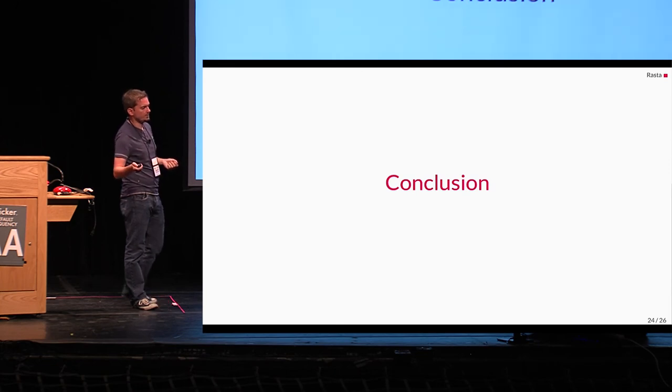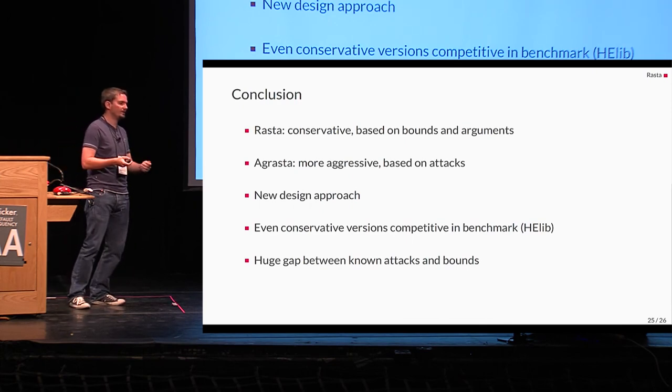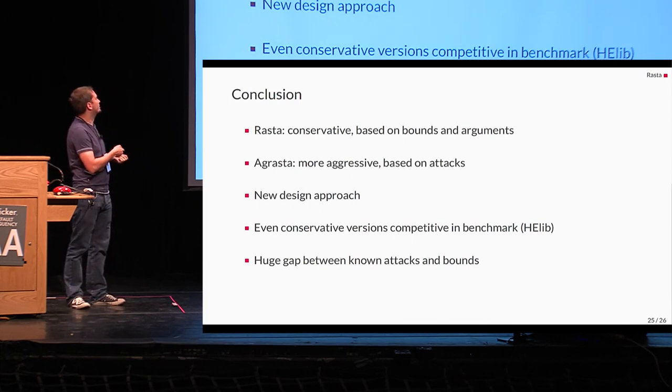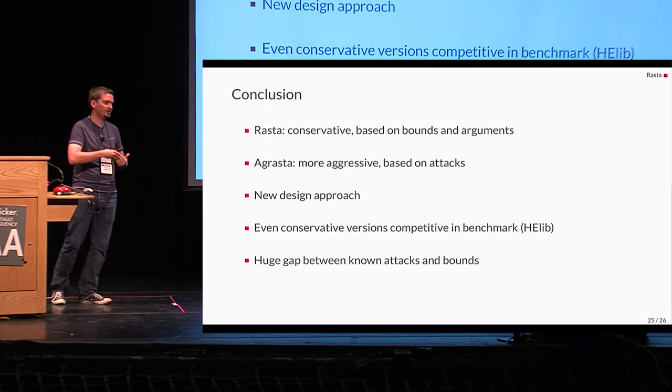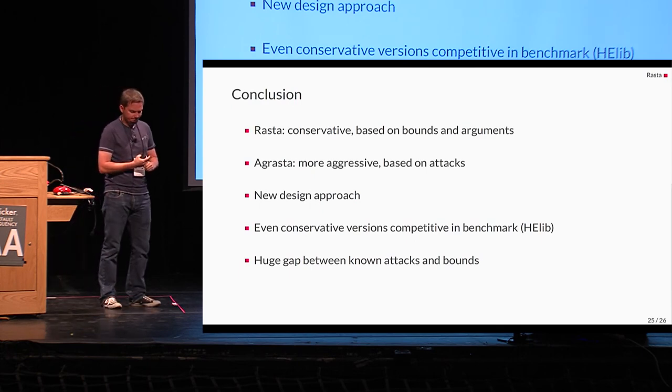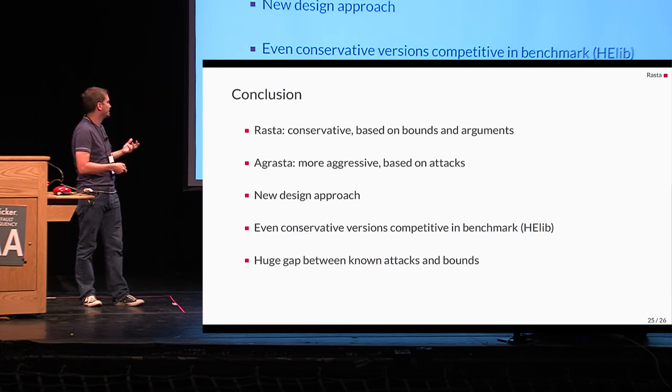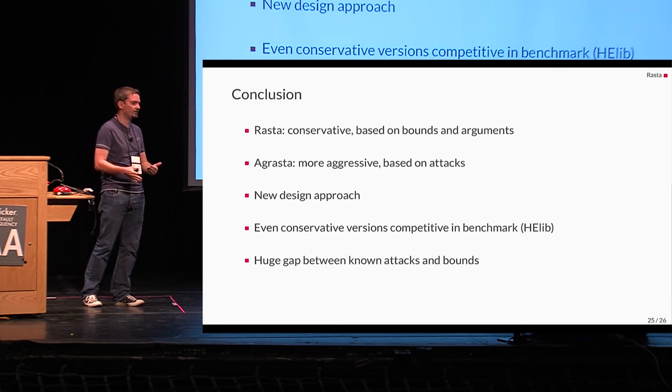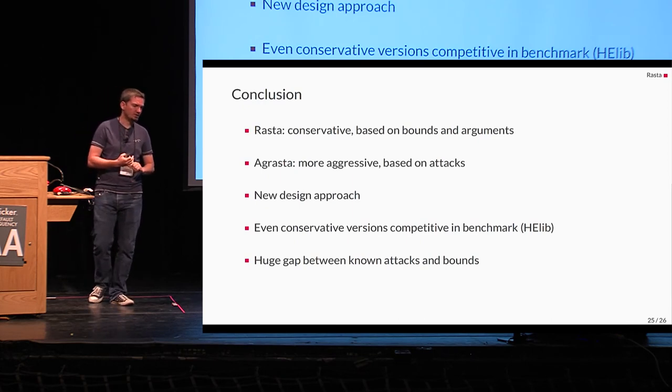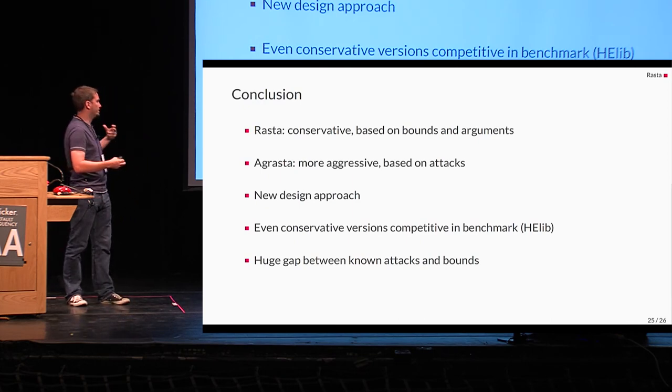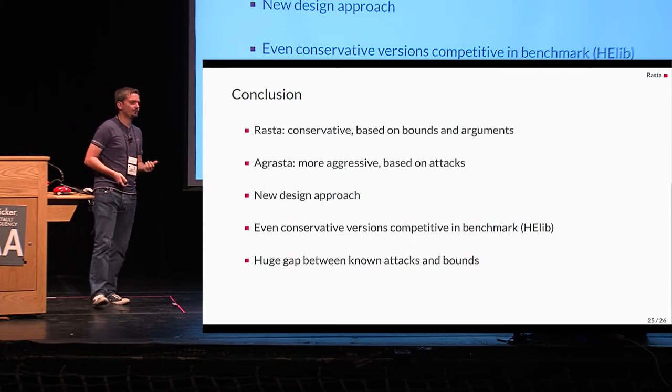So, let's come to a conclusion. What we have seen here, we have seen a new design strategy, which is called Rasta, and two parameter sets of it. One is conservative and based on bounds and security arguments, and one which is more aggressive and solely based on the best attacks we can do. In the paper, you can find benchmarks we did in HElib, which shows that even the conservative versions of Rasta are competitive with existing designs. And as I've shown in the last figure, there's actually a huge gap between the known attacks, the best attacks that we can do, and the bounds that we get. So, thank you.